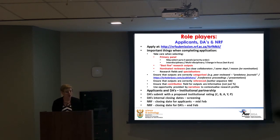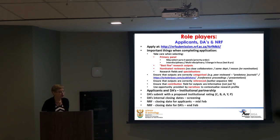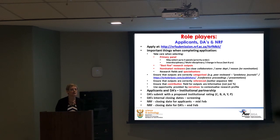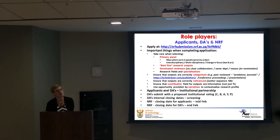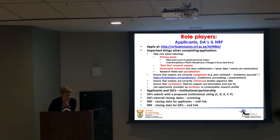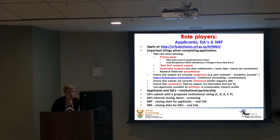For the application, you apply online through the NRF submission website. Everyone uses the same CV when applying for rating, funding, or any NRF activity. About 90% of your rating application is made up of your CV information — career history, research outputs in different categories, and specialization. You can constantly update this so that when the call opens you simply migrate the data. Take care when selecting your primary panel — you can select up to three panels in order of priority.